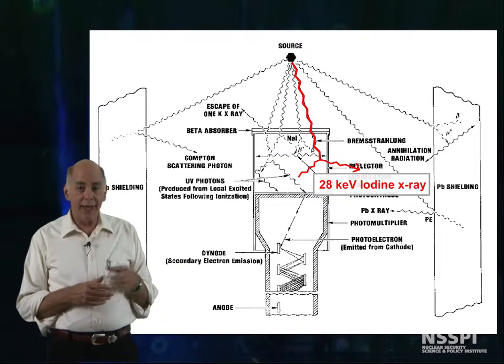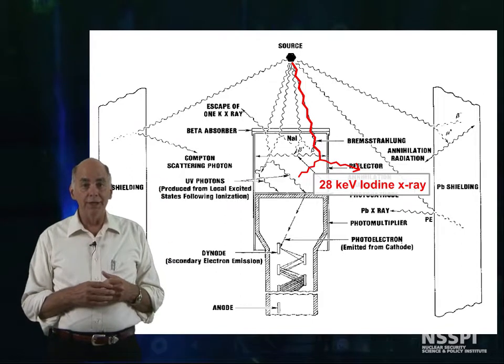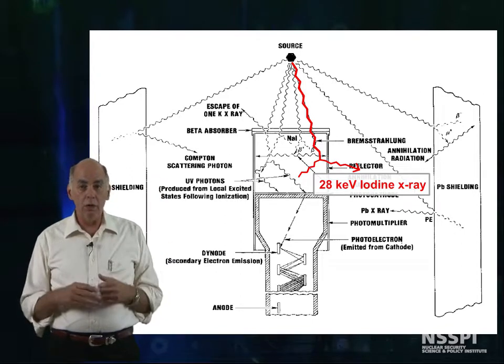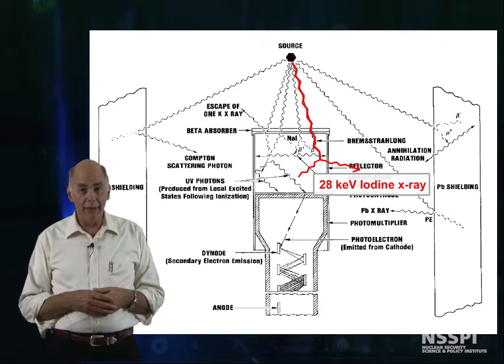Iodine-characteristic x-rays can escape from the detector, and the detector response will be lowered by the energy of the iodine-characteristic x-ray, 28 keV.